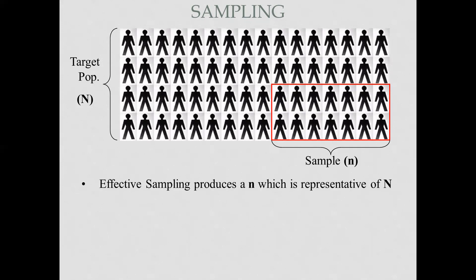Effective sampling produces a small n which is representative of the capital N. The target population is everybody related to your work, but the sample is the group you feel comfortable working with, can access, and who will provide you data — for example, people whose contact numbers you have. It is possible that not all 50 people you approached will respond at the same time, so you may need to revisit the target population to find accessible participants.